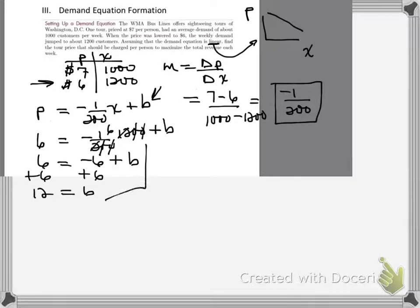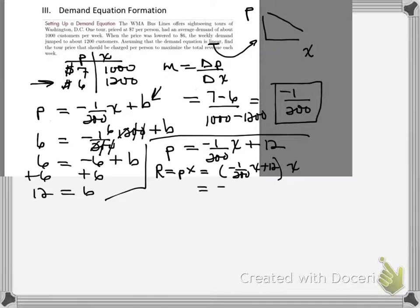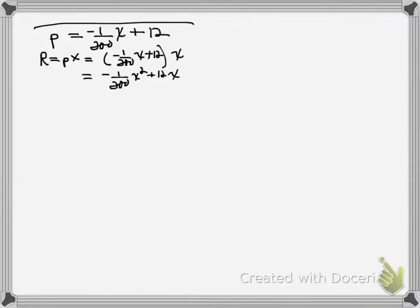Now we can build the revenue equation: R = price × quantity = (−(1/200)x + 12) · x. Distributing gives R(x) = −(1/200)x² + 12x. That's a downward-facing parabola, which means when we take a derivative we will be maximizing revenue.